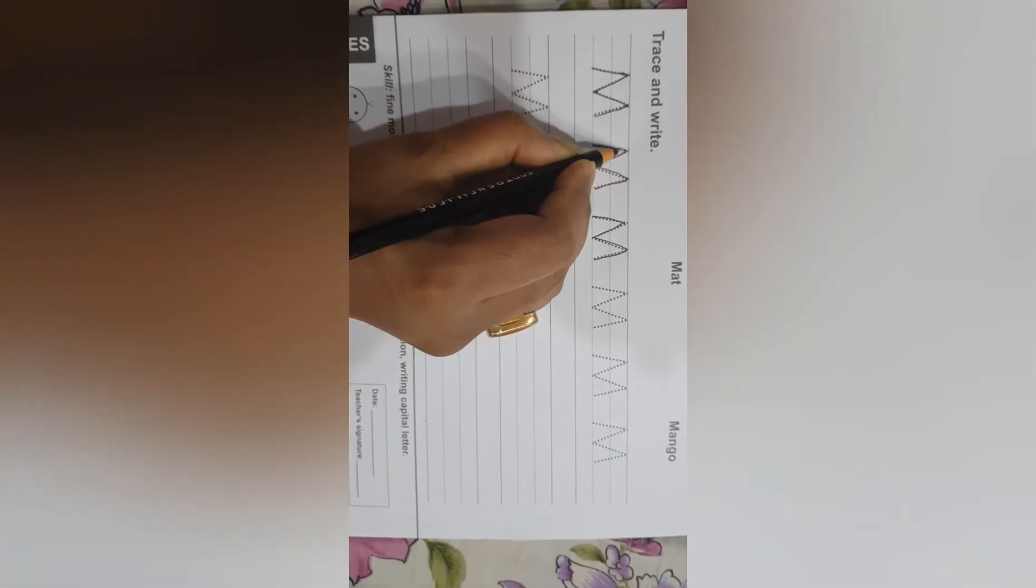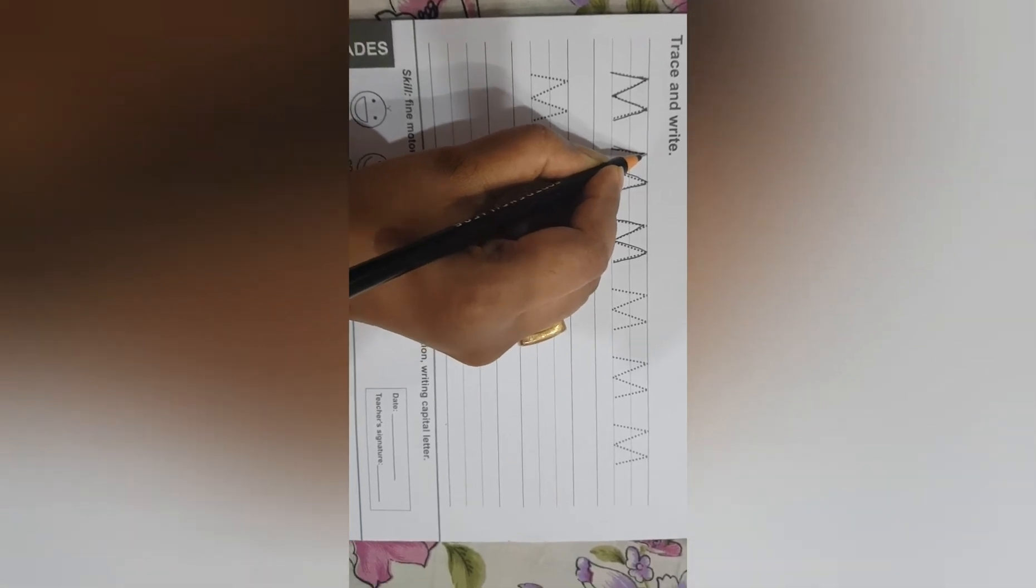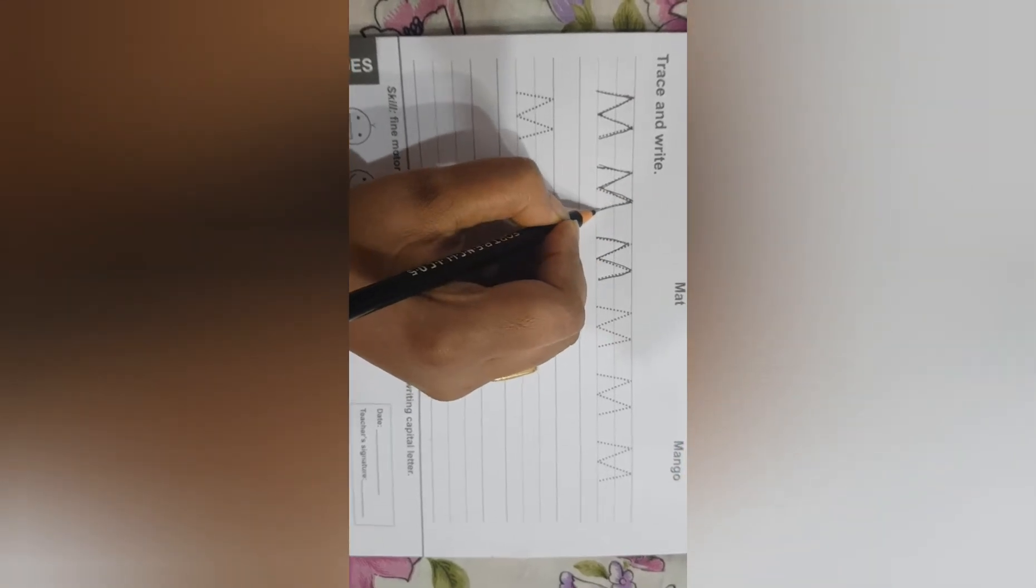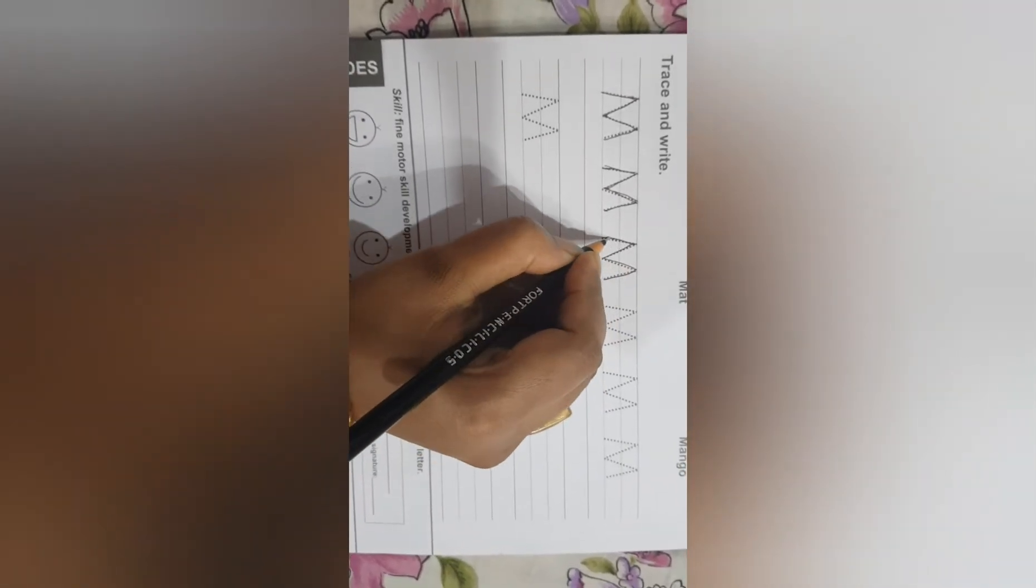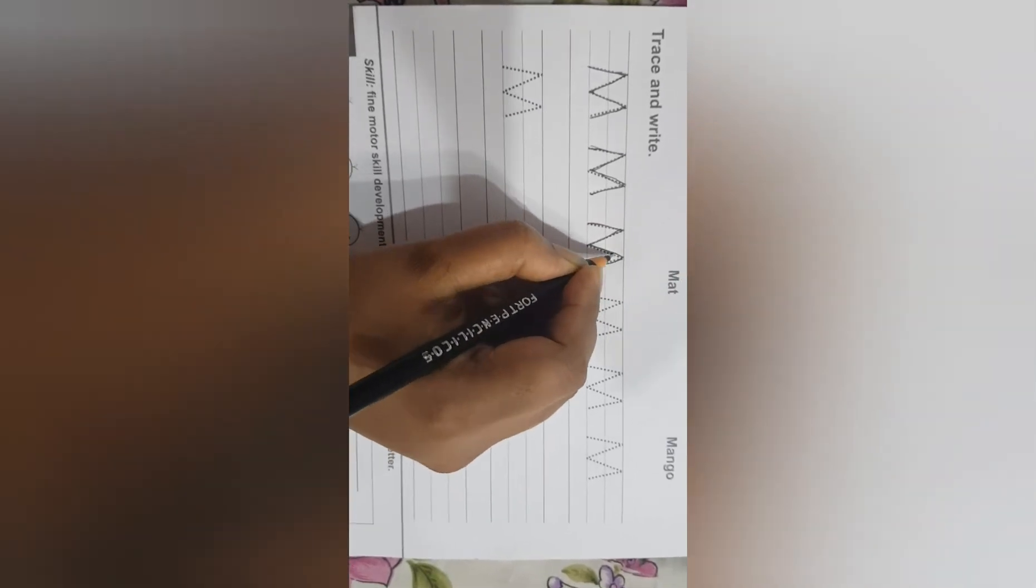Next, one standing line from the top of the standing line, go down and goes up, and another standing line. M for mat, M for mango.